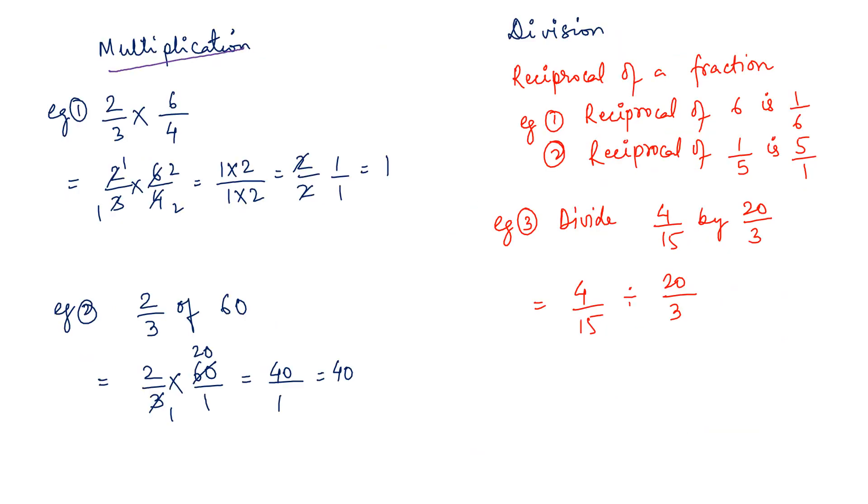Now multiplication of the fraction very simple. You just write the numbers and keep on canceling the numbers. Now cancellation can happen either in the crisscross form or in the top and bottom form. You cannot cancel two numbers. Suppose 2 was here and 3 was here and 4 was here and 5 was here. Now you will not cancel 2 and 2 or 4. This is wrong. Either in the crisscross form or top and bottom form. So you can see 2 by 3 into 6 by 4 which is reduced as 2 by 2 and the final answer is 1. These all things are already done. We are only discussing the main points. Now 2 by 3 of 60, of means multiplied and a single number can be written in fraction as 60 by 1. Cancelling them you get the answer as 40.